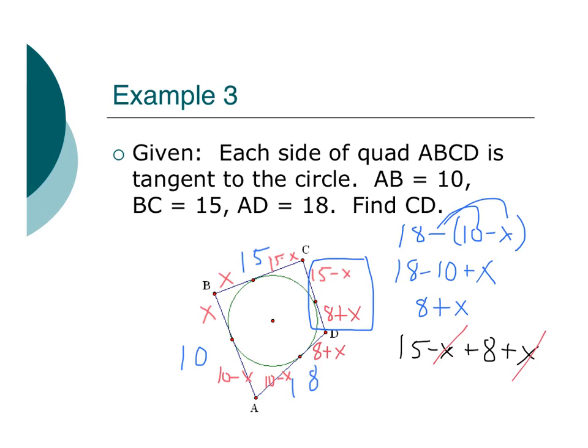When I want to combine these two together, 15 minus X plus 8 plus X. I want to add the two segments to get the whole side. The X's cancel. And I'm left with 15 plus 8, which gives me 23. And there's my missing side. If you need an instant replay, you can rewind it. It's about a three-minute clip right here.